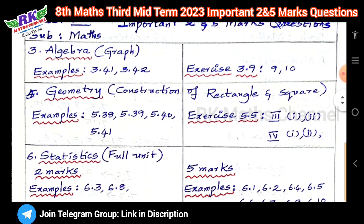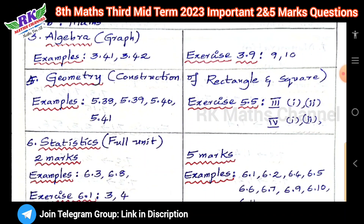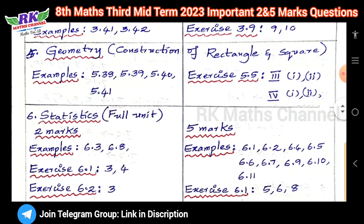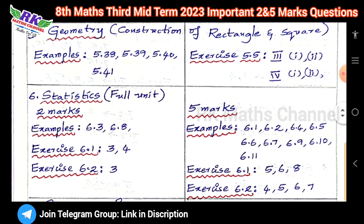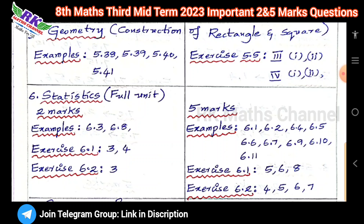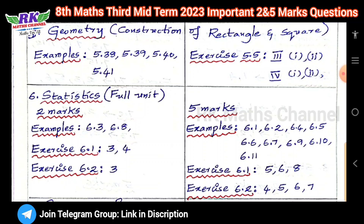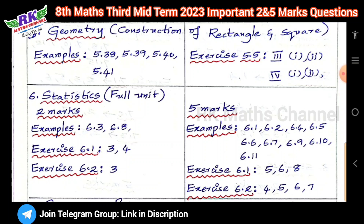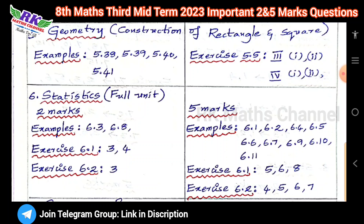Next, the third chapter and fifth chapter cover graph and geometry. The sixth chapter is the full statistics unit — pie chart, frequency. For 2 marks: Exercise 6.1 problem numbers 3 and 4, and Exercise 6.2 problem number 3.